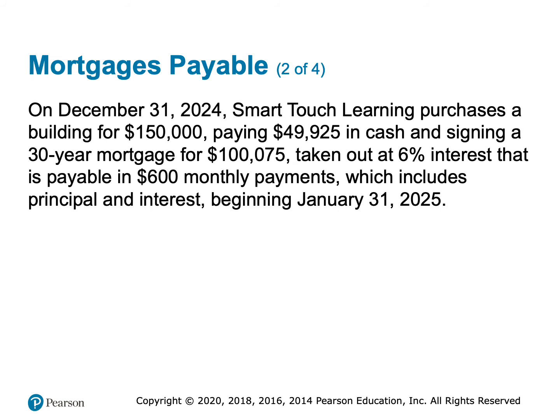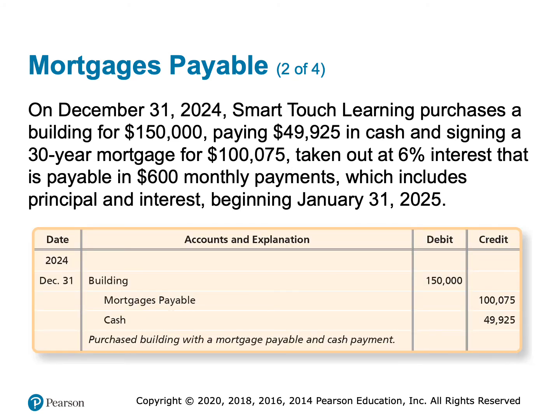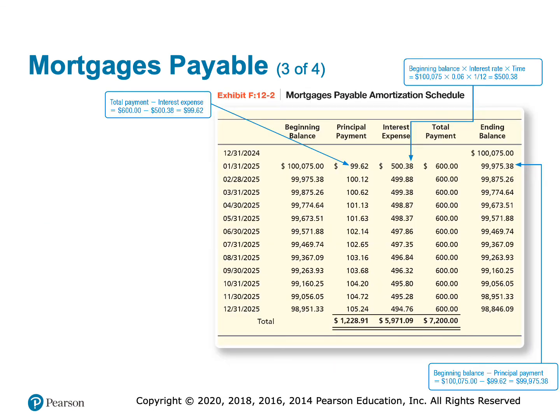Here we purchased a building for $150,000. We paid $49,925 in cash at signing, and the remaining $100,075 is a mortgage at 6% interest with monthly payments of $600. On December 31st, 2024, the entry is: debit building $150,000, credit cash $49,925, and credit mortgage payable $100,075.